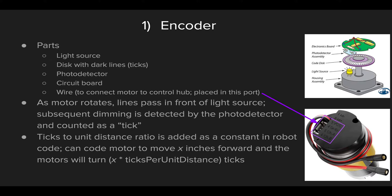This disc with the ticks on it is attached to the shaft of the motor, and as that shaft rotates, the disc rotates as well. Each time a tick passes over the light source, the light dims a little bit. The photo detector, situated right above the light source, detects that slight dimming and registers that one tick has passed. In your robot code, there's a constant you can specify so that once a certain number of ticks has passed — meaning once the shaft has rotated a certain amount — you've traveled one inch. In the encoders we're using in our odometer module, once we've covered 308 ticks, we know we've traveled forward one inch.